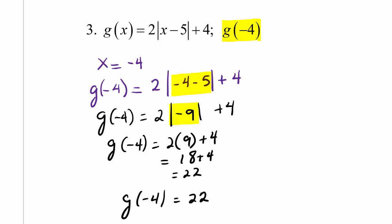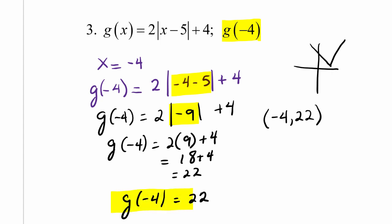So g of negative 4 is 22. On the graph of g, the ordered pair would be (negative 4, 22). Tying in some previous work: absolute value functions are the functions that have graphs that look like V's. g of negative 4 is 22.